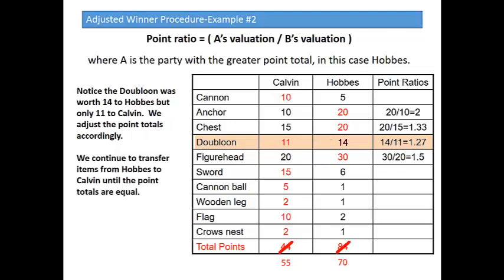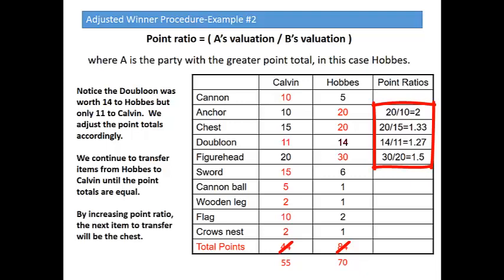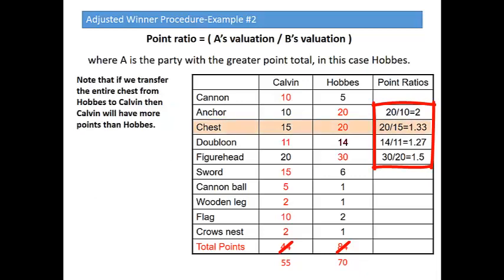We continue to transfer items from Hobbes to Calvin in increasing order of point ratios until the point totals are equal. By increasing point ratio, the next item to transfer is the chest at 1.33. Note that if we transfer the entire chest from Hobbes to Calvin, then Calvin would suddenly have more points than Hobbes. If we transfer the entire chest, Calvin would get an additional 15 points, bumping him up to 70, and dropping Hobbes all the way down to 50. So we don't want to transfer the entire item, otherwise our initial winner, Hobbes, would become the loser.